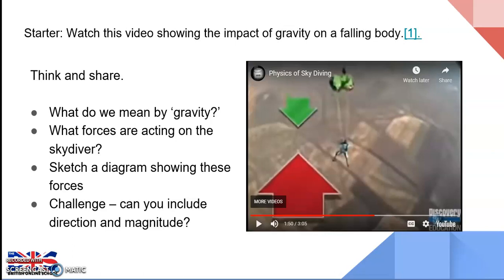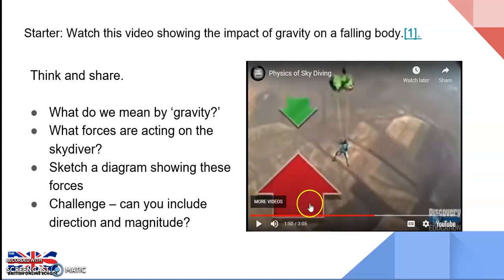The next thing that happens is that something does change: the parachute is opened by the skydiver. When that happens, the parachute immediately vastly increases the size of the air resistance, and this force is much greater than the downward force due to gravitational field strength. That results in a deceleration. The skydiver slows down rapidly until they reach a new, slower terminal velocity, which allows them to glide safely down to land on Earth.